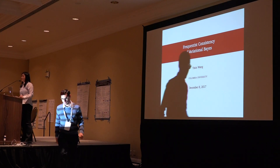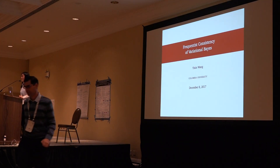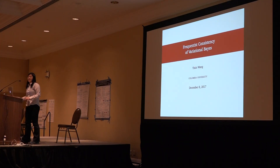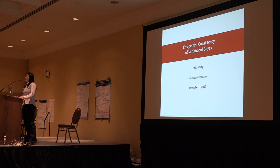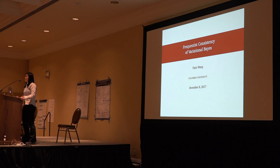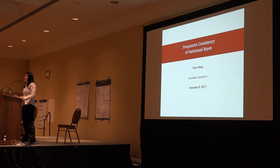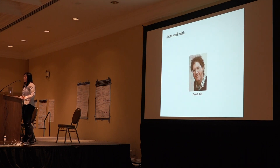Hi everyone. I'm Ishii Long from Columbia University. I'm going to be telling you about frequentist consistency of variational Bayes, where we show that variational Bayes is consistent in asymptotic and normal. This is joint work with my advisor, Professor Dave Blei, at Columbia University.